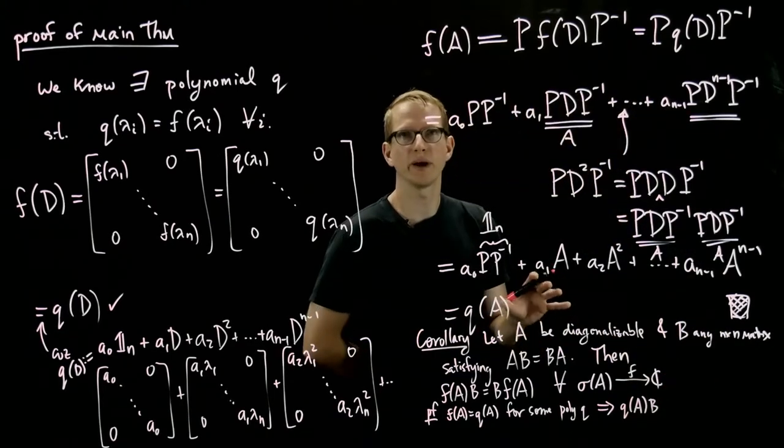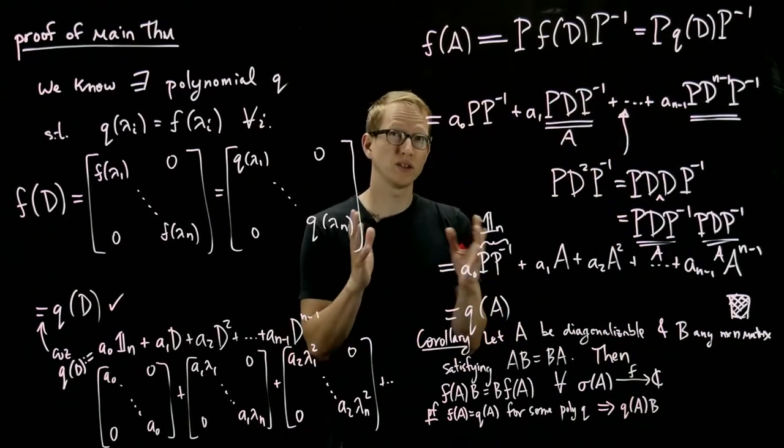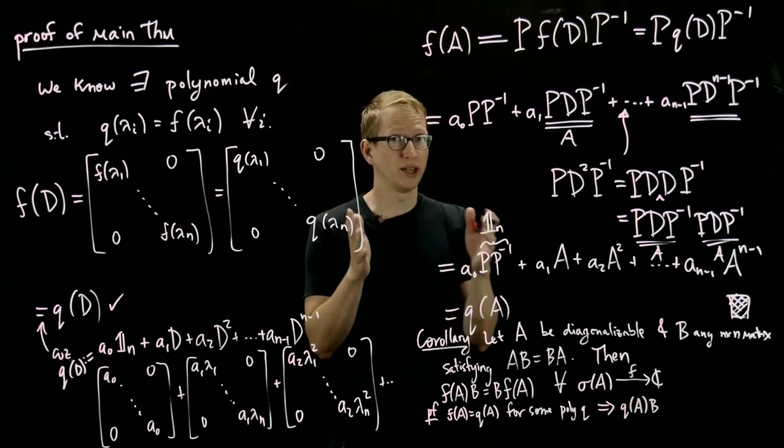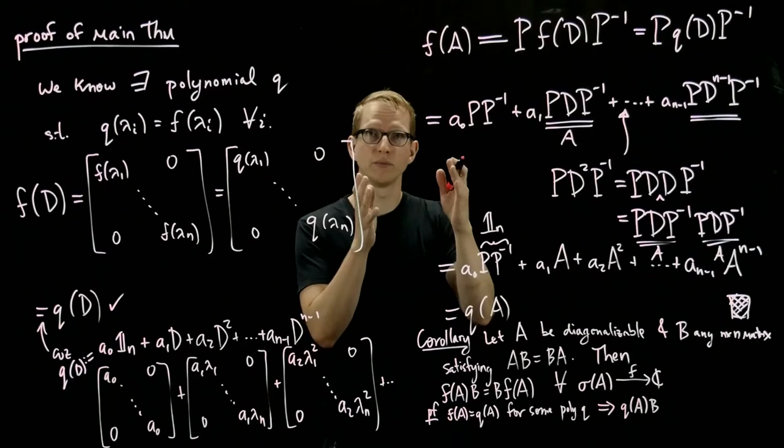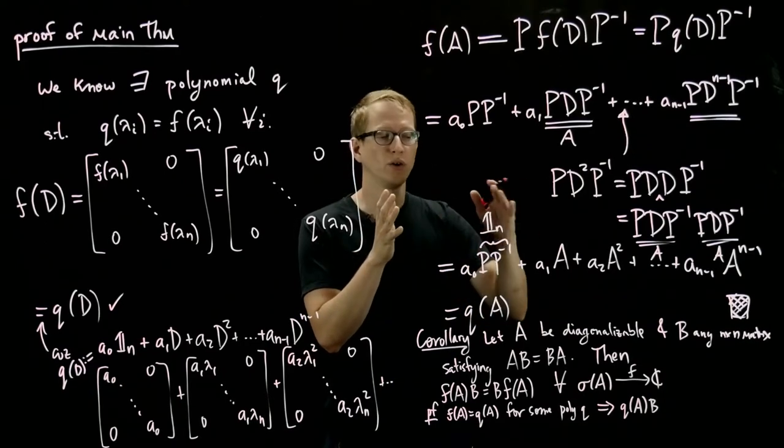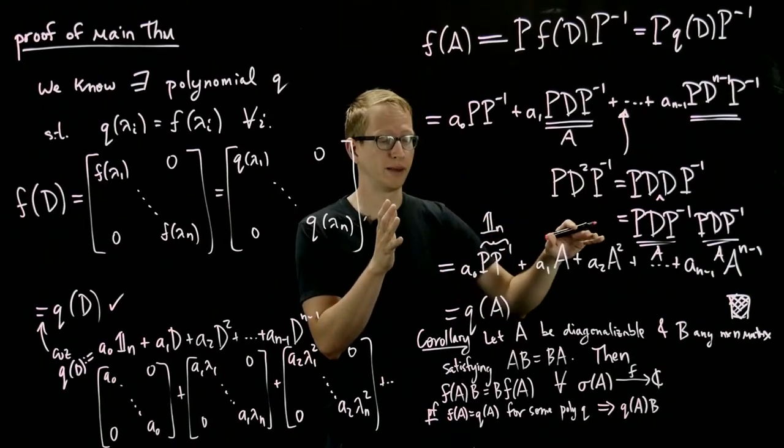And each of the terms look like A to the jth power times B. So you have A to the jth power times B. Now, A to the jth power means you write the matrix A j times. And if you have a B on one side, you can use this to move each of those A's one over at a time.